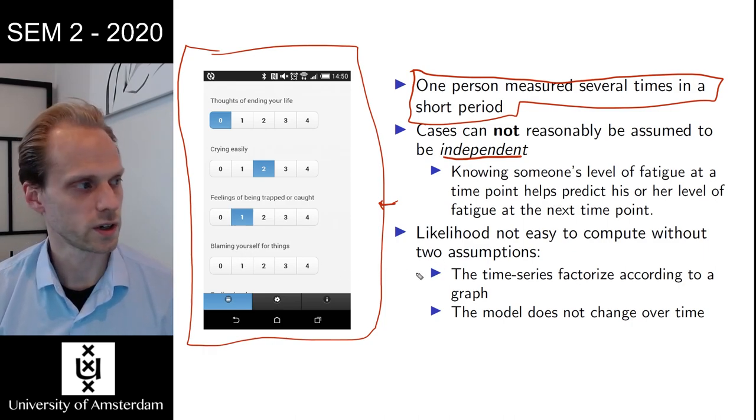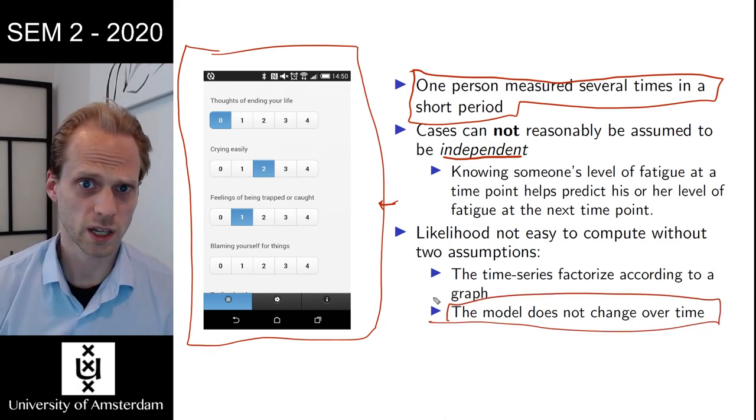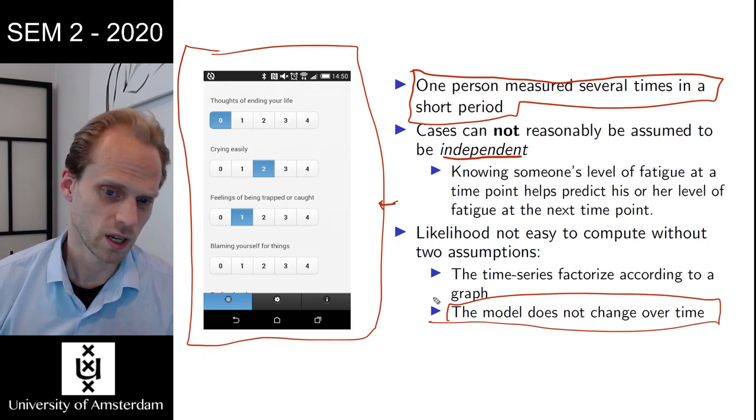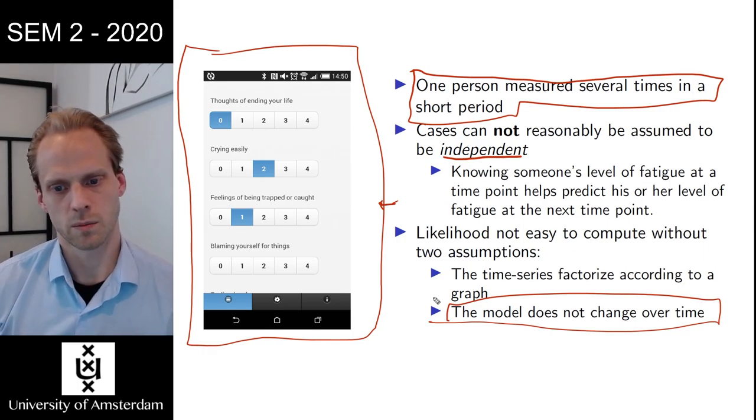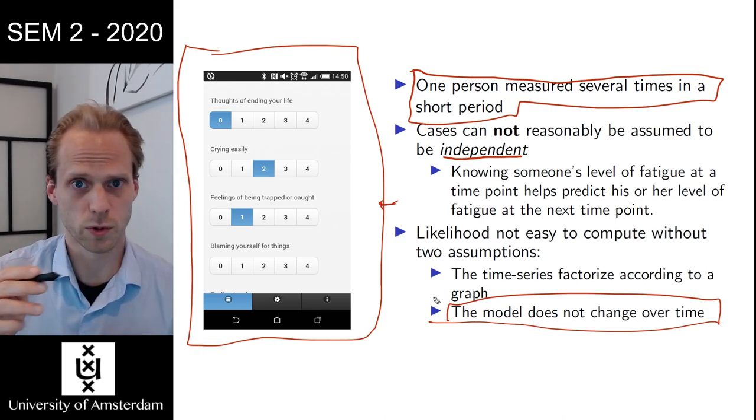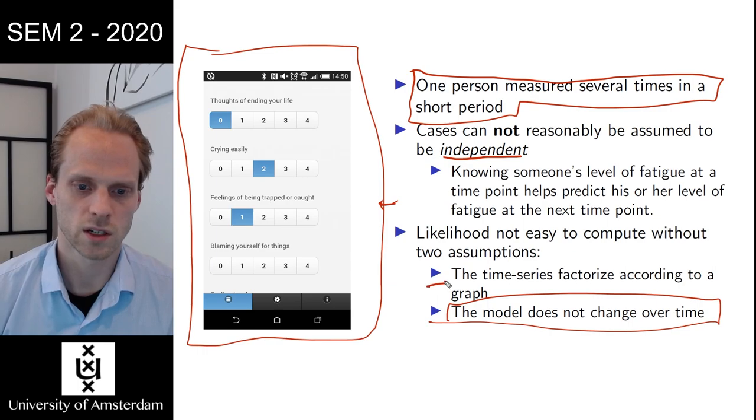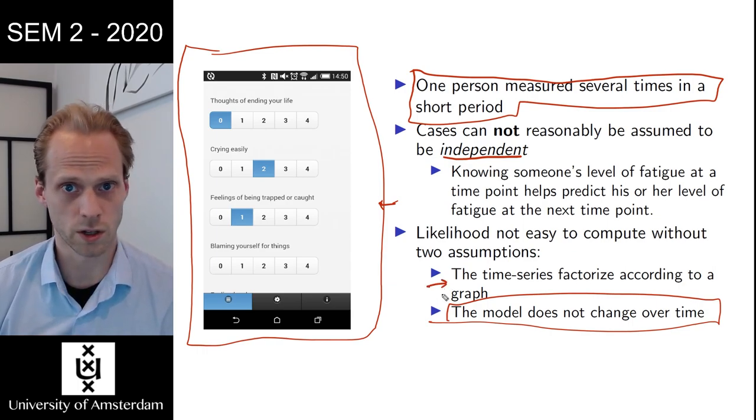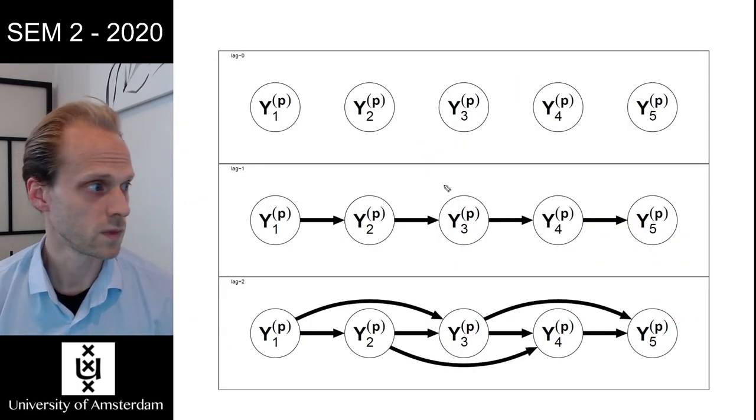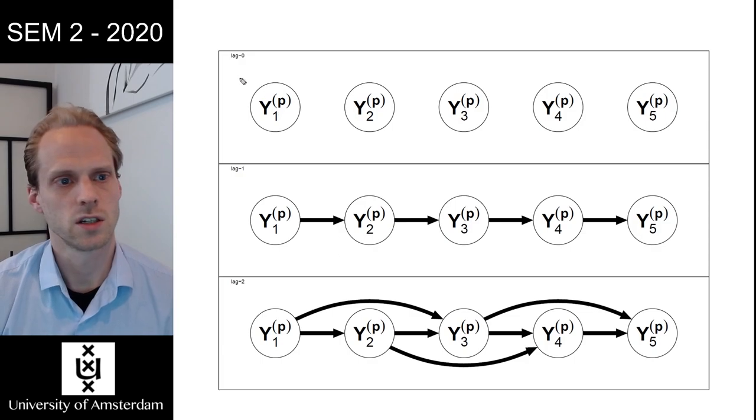So what do we do? We need to make two very strong assumptions here. One is that the model should not change over time. There are some ways around it, but mostly you have to assume that the model is stationary. So that every observation we have of a person is a replication for a same model. And we need to take into account that there is some sort of graph factorization going on in the dataset.